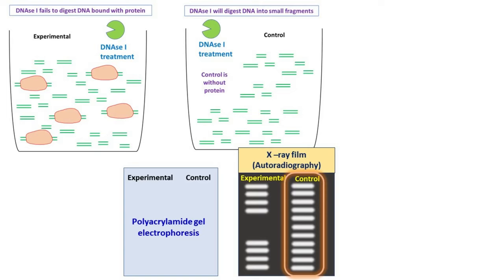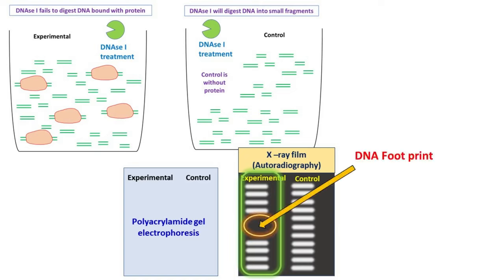The control experiment will show a ladder as the DNA was digested into small fragments. The experimental setup will also show a ladder, but some portion of the ladder will be missing. This missing region of ladder is known as DNA footprint.